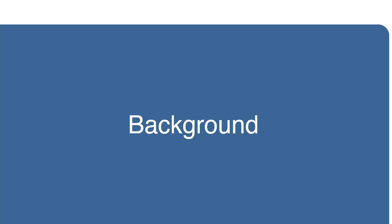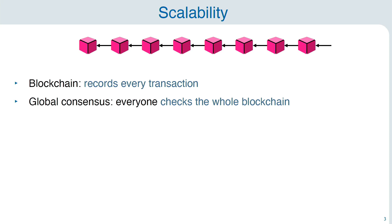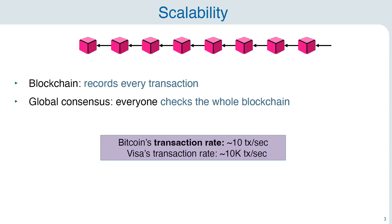Let's jump into some background. As you also heard this morning in the first blockchain session, permissionless cryptocurrencies have a scalability issue. We have a global data structure, a blockchain usually, that records every transaction globally, and we have a consensus mechanism on top of this where every user verifies every transaction in this blockchain, and this leads to a bottleneck. In Bitcoin, for instance, we can handle only tens of transactions per second, which is not a lot if we compare it to more centralized payment systems.